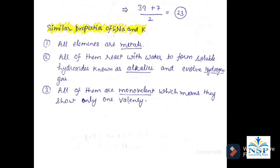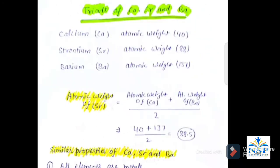So it is clear that the atomic weight of the middle element is the average of the first and third element. Similar properties of lithium, sodium, and potassium are: all elements are metals; all of them react with water to form soluble hydroxides known as alkalis and evolve hydrogen gas; and all of them are monovalent, which means they show only one valency.